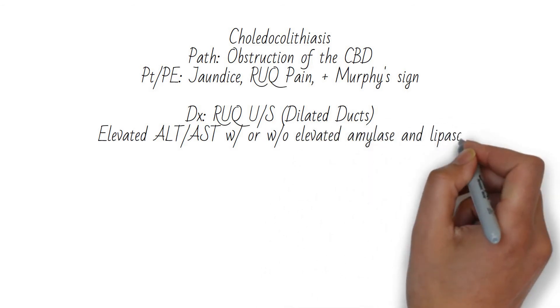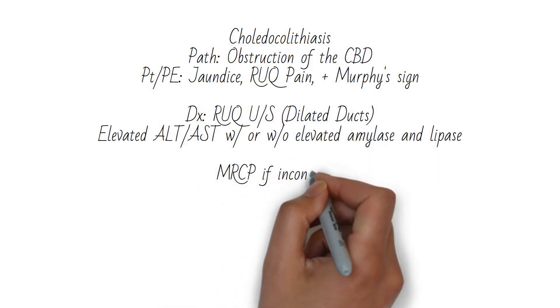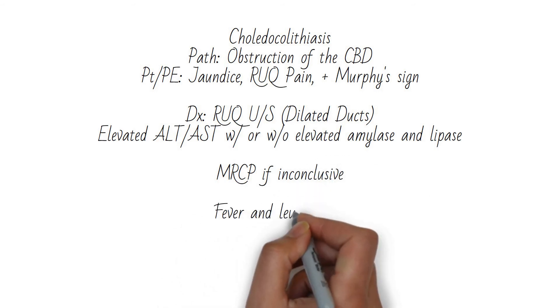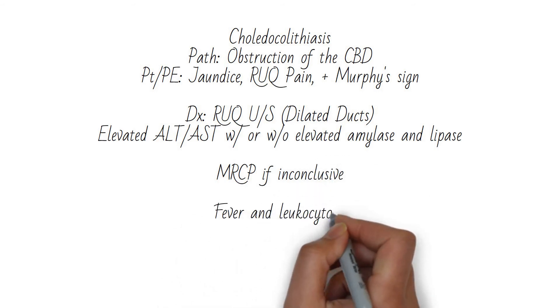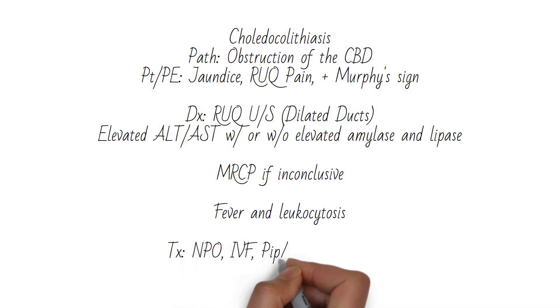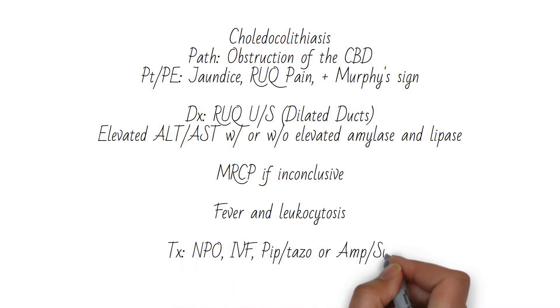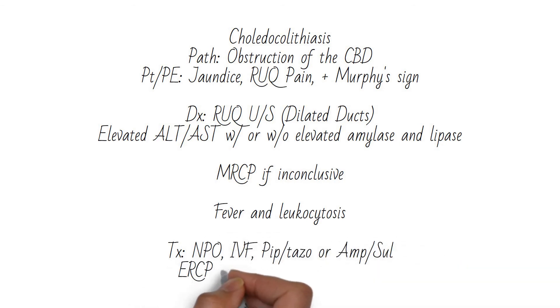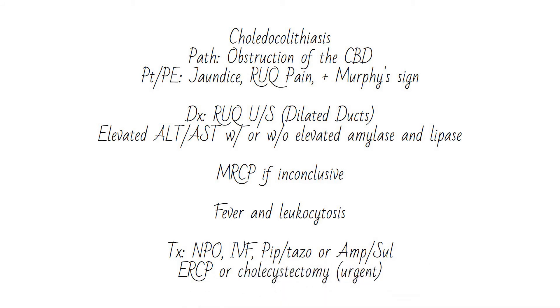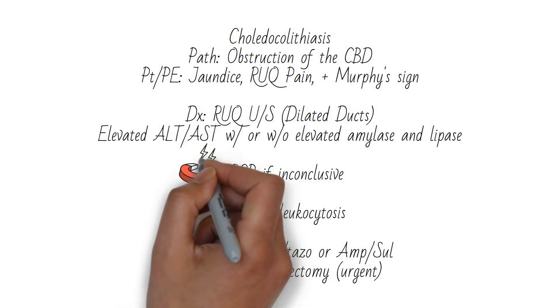You will make the patient NPO and start IV fluids and antibiotics. Options in addition to ceftriaxone and metronidazole include Pip-Tazo and ampicillin-sulbactam. Treatment usually includes ERCP initially followed by cholecystectomy, but cholecystectomy may also be used as primary therapy. However, the surgeon will need to remove the obstructing stone during surgery.